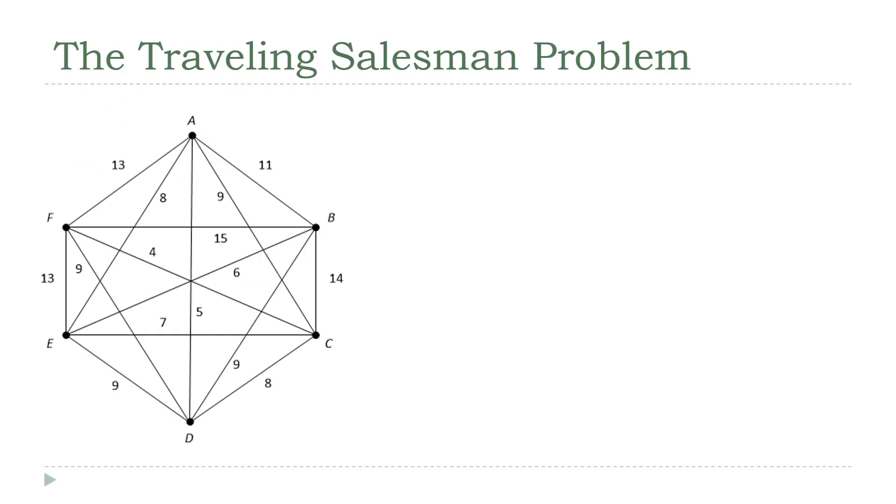So, the Traveling Salesman problem, just by way of a quick review here, starts with a weighted graph like the one we've got here, and our goal is to find the cheapest possible circuit through the graph. In other words, we're trying to find a walk that touches every vertex exactly once and that ends back at the same place where it started.